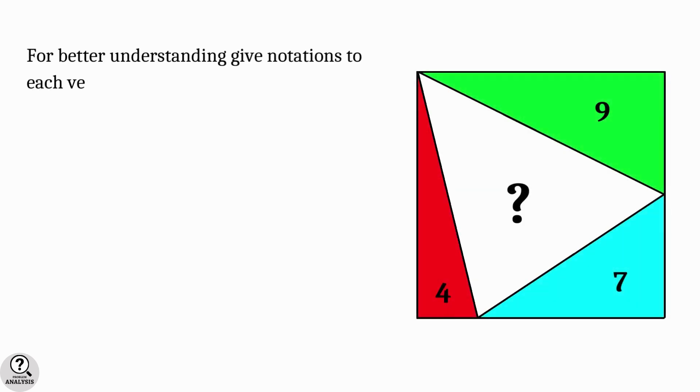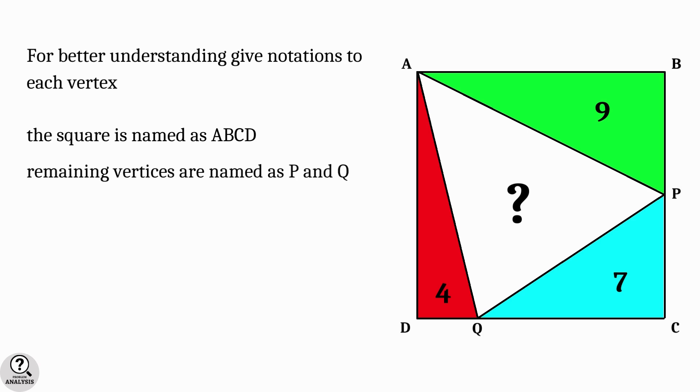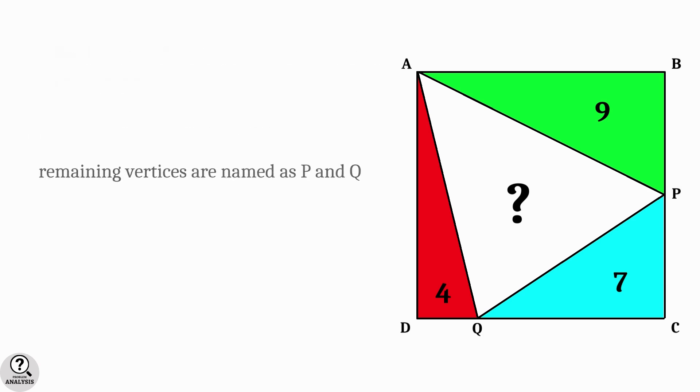It will be better if we put some notations to each vertex. I am denoting the square by ABCD and the remaining two vertices by P and Q. Now we are going to analyze the problem.